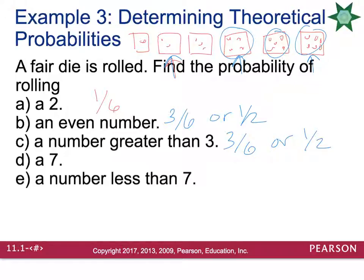What is the probability of rolling a seven? Notice that there's no seven on a die. So the probability of that happening is zero chance.